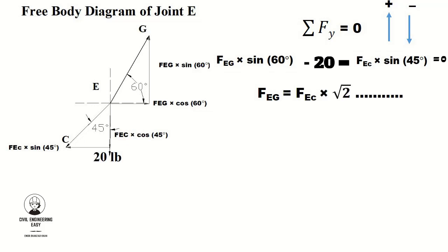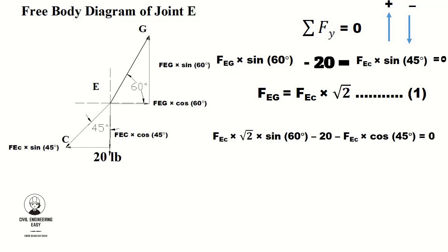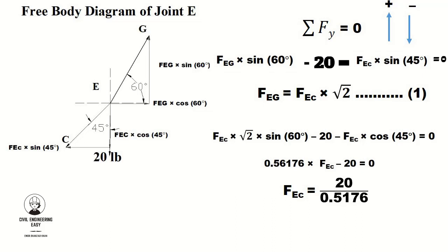Now solve the equilibrium equations. Since we already found FEG in terms of FEC from equation one, substitute that value into the ΣFy equation. By simplification we get 0.5176 × FEC − 20 = 0. Further simplifying: FEC = 20 / 0.5176, which gives FEC = 38.64 pounds. This means there is 38.64 pounds of tension in chord EC.